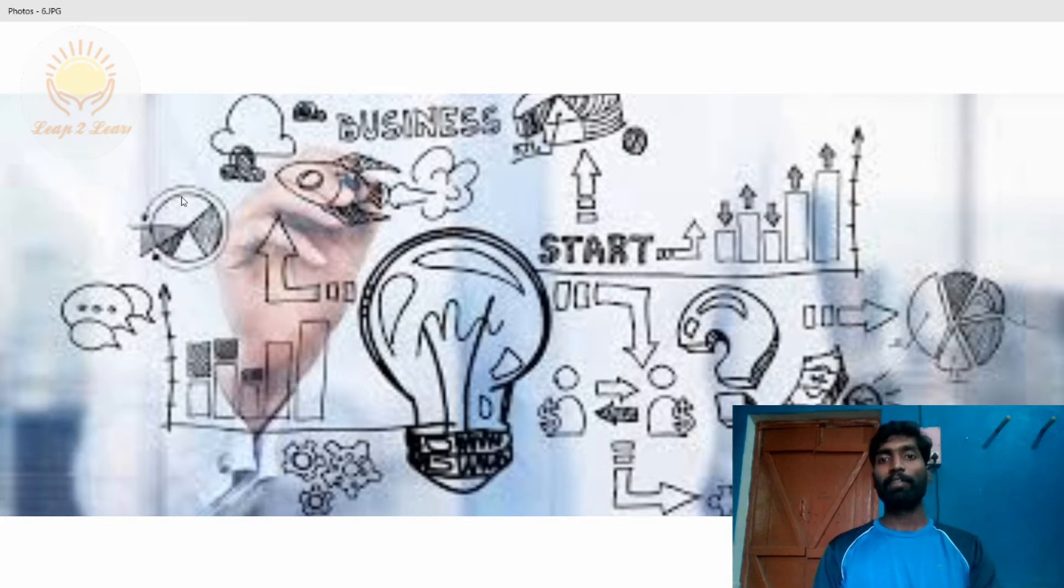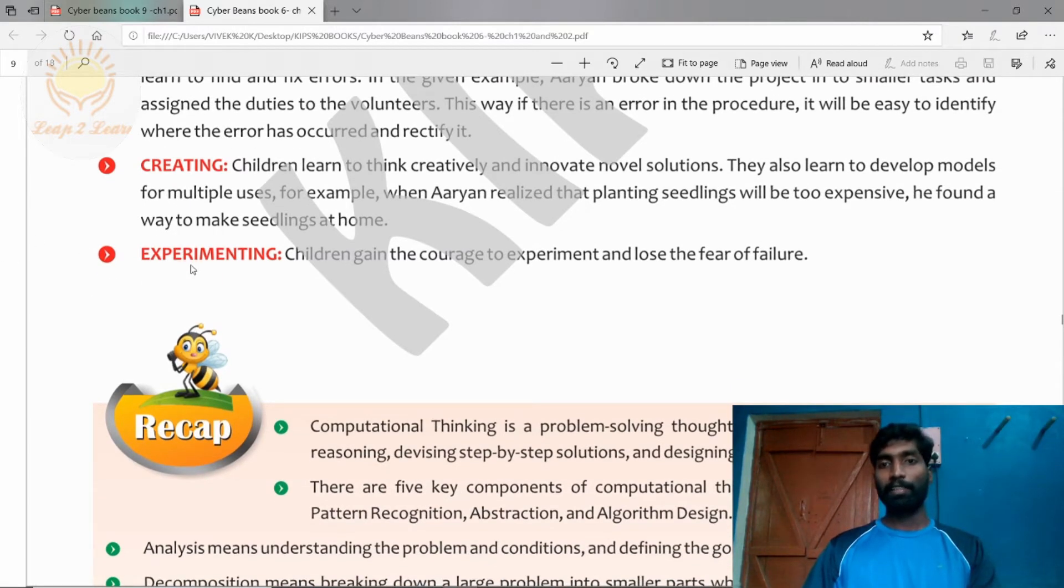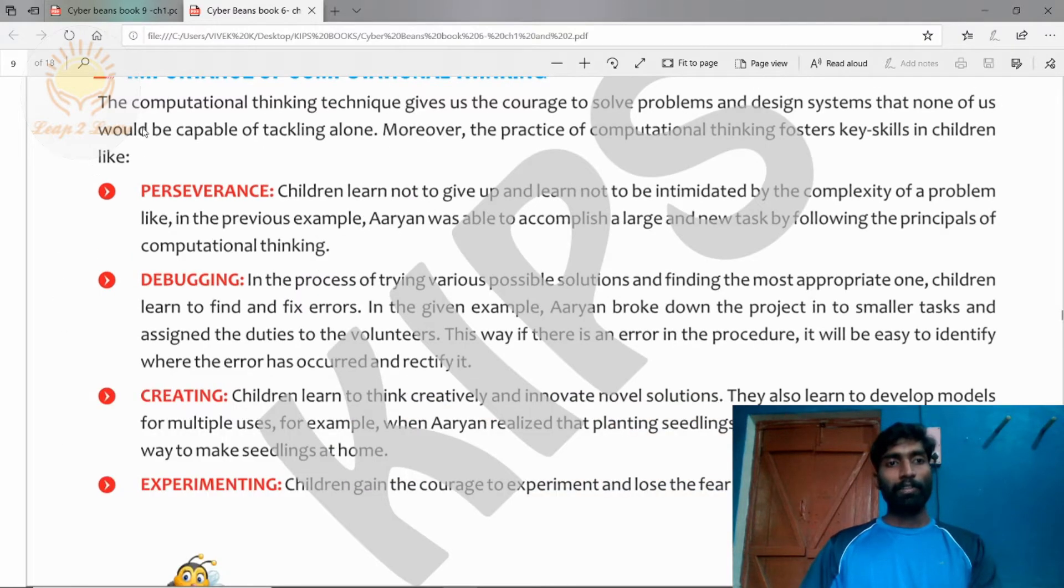And next is experimenting. Children gain the encouragement of excitement and lose the fear of failure. These are the four main importance of computational thinking.